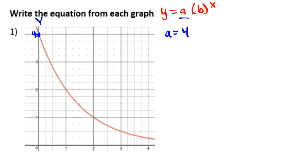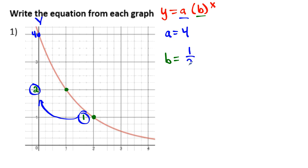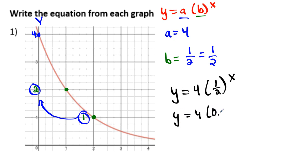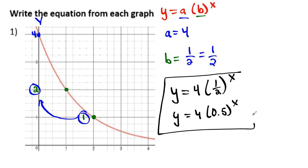Now find the ratio B. We need some other values, so looking at the graph I can see a nice point at Y equals 2, and going down from there I get Y equals 1. Taking the value 1 and dividing it by its previous value of 2 gives us 1/2. So our equation is Y equals 4 times (1/2) to the X power, or equivalently 4 times 0.5 to the X power. Either form is acceptable.